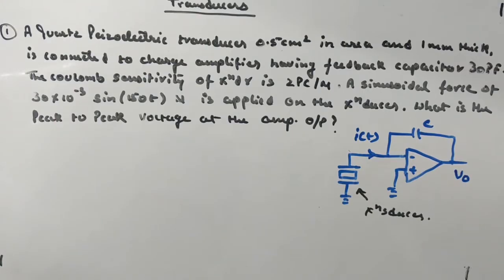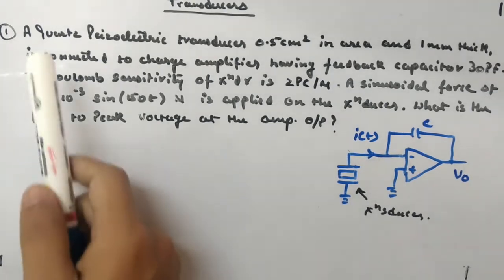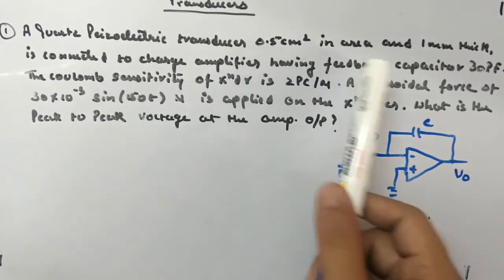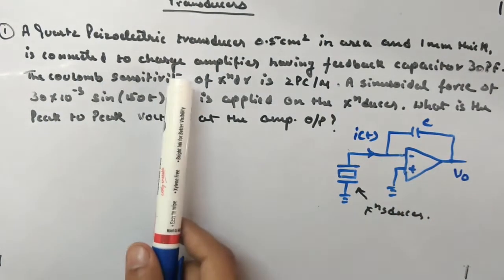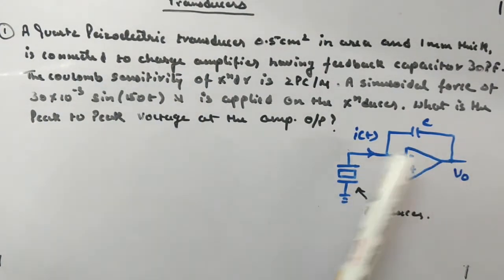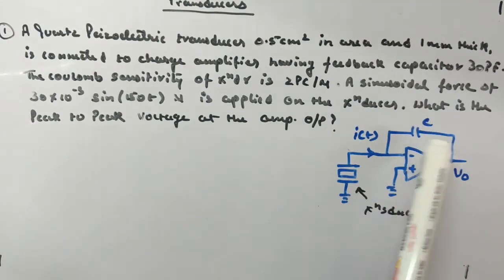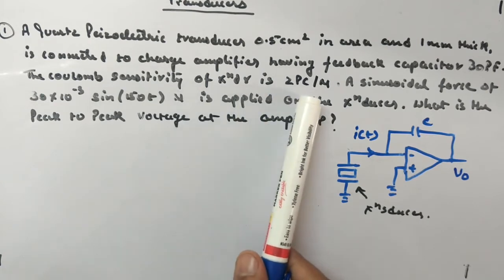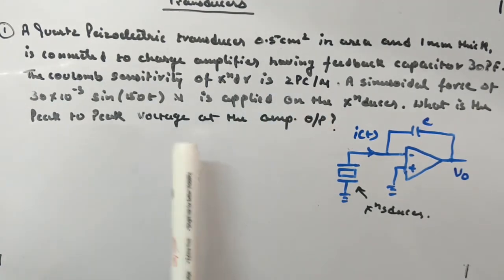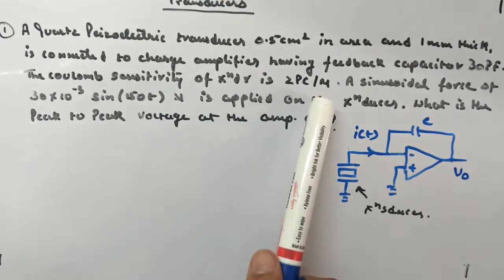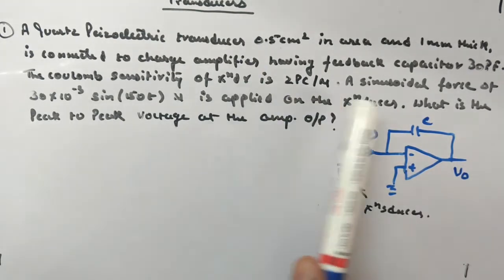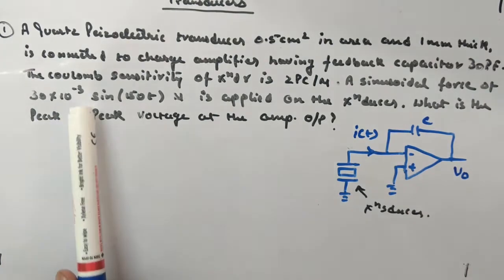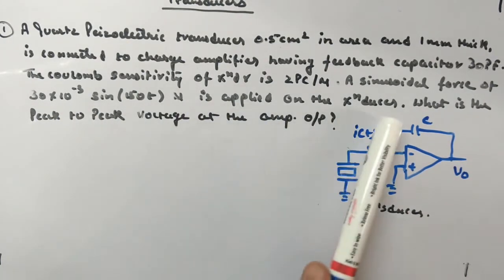Let's look at an example on a piezoelectric transducer. A piezoelectric transducer 0.5 cm² in area and 1 mm thick is connected to a charge amplifier having a feedback capacitor of 30 picofarad. The coulomb sensitivity of the transducer is 2 picocoulomb per newton — this is also the charge sensitivity. A sinusoidal force of 30 × 10⁻³ sin(150t) newton is applied on the transducer.